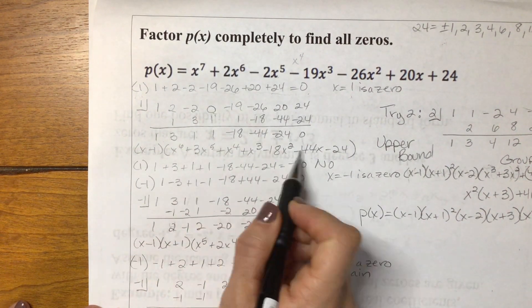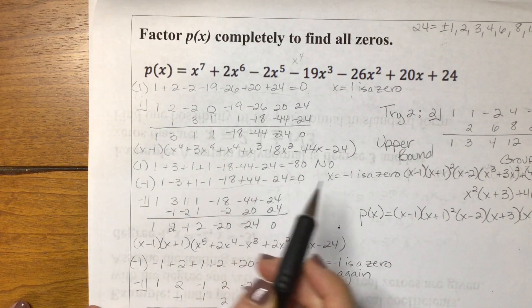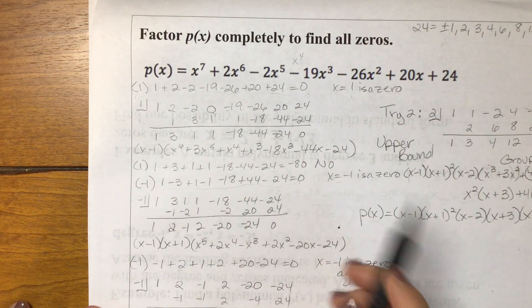And so you can see I did that here. I added those up and I got 0. So x equals negative 1 is a zero.